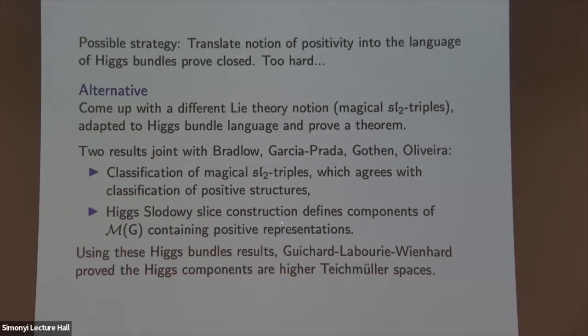Using these results, Guichard, Labourie, and Wienhard were able to prove that the components described using Higgs bundles are indeed higher-rank Teichmüller spaces — all representations in these spaces are discrete. This provides evidence that if the conjecture is true, these components would all have to be higher-rank Teichmüller spaces. They used properties of the representations in these components to conclude that all representations in these spaces are discrete.